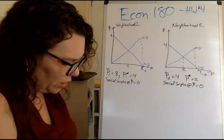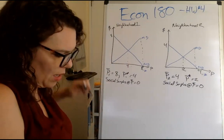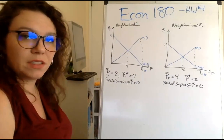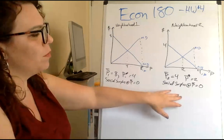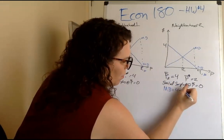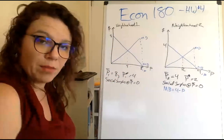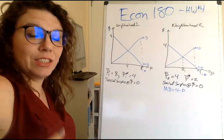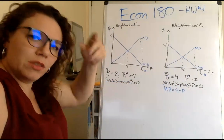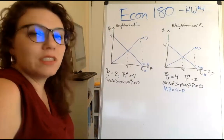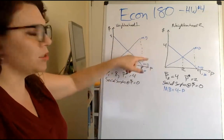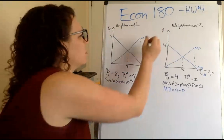Now let's talk about why the pollution levels are different in the two neighborhoods. It's because the marginal benefit curves are different. This firm had MB2 = 4 minus P, so the cost associated with pollution abatement — limiting pollution — is a lot lower. They're a cleaner firm, so it's easier for them to reduce pollution, meaning they have a lower social optimum. The social surplus, however, is the same in both cases, and that's a function of the shapes of the marginal damage and marginal benefit curves.